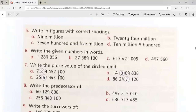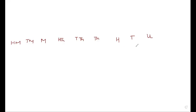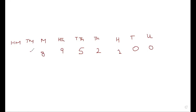Now we can easily find the place value of a digit in a number by writing it under the place value chart. Under unit I'm going to write zero, under tens again zero, under hundreds we have one, under thousands is two, under ten thousands is five, and the next value is nine, then eight, then seven.